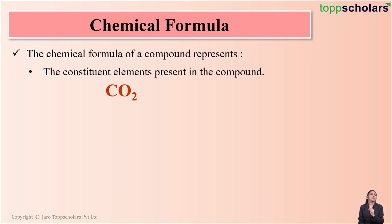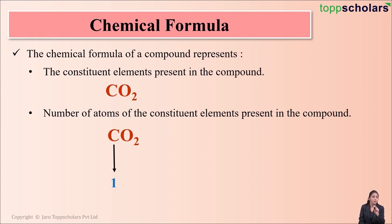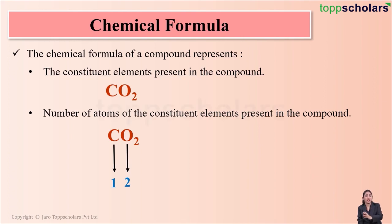The chemical formula also gives us information about the number of atoms of the constituent elements that are present in the compound. In CO2, there is one atom of carbon and exactly two atoms of oxygen. So a chemical formula helps you to identify the elements present in the compound and also gives you information about the number of atoms of those constituent elements.